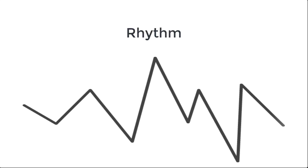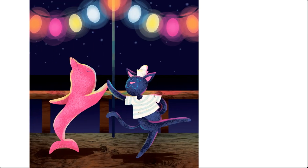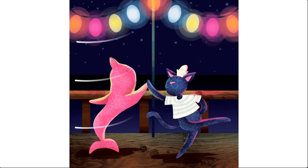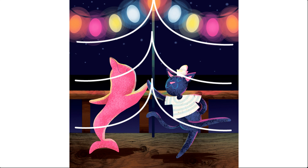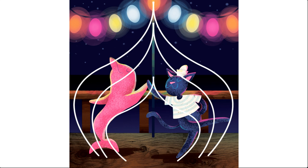Visual rhythm is created through repetition and variety. Rhythm can be slow, fast, consistent, inconsistent, etc. In this piece, a consistent and even rhythm is created by the careful balancing of shapes and elements within the composition.